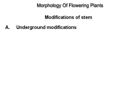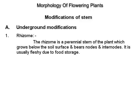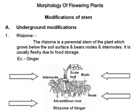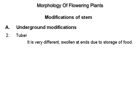Modifications of stem. Underground modifications. Rhizome: the rhizome is a perennial stem of the plant which grows below the soil surface and bears nodes and internodes. It is usually fleshy due to food storage, example ginger. Tuber: it is swollen at ends due to storage of food, example potato.